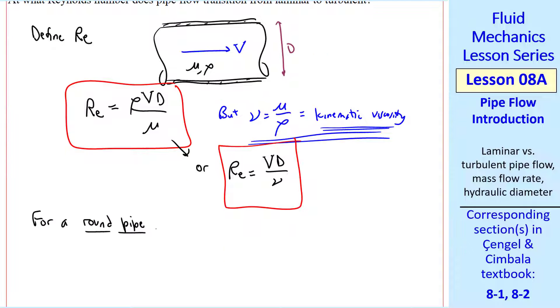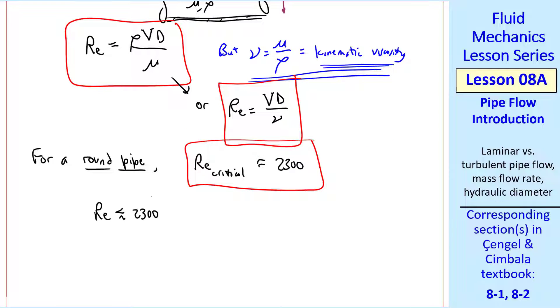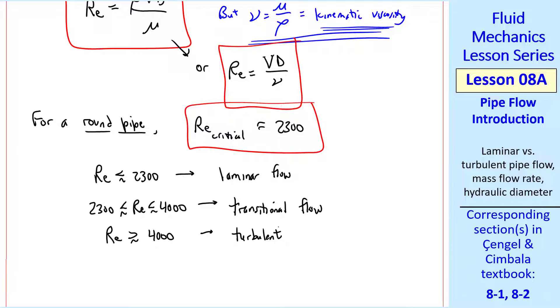For a round pipe, the critical Reynolds number is around 2300. What that means is that for typical pipe flows, if Reynolds number is less than about 2300, we have laminar flow in the pipe. If the Reynolds number is between 2300 and about 4000, we have transitional flow, which is kind of between laminar and turbulent. And if RE is greater than about 4000, the flow is turbulent.